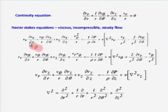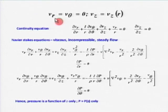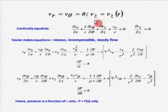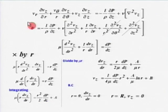Using the fully developed concept, we neglected the R-momentum equation and the theta-momentum equation. V_R equals V_theta equals zero, because it is fully developed flow and V_Z is only a function of R, not theta and Z. The R-momentum and theta-momentum equations are not required. I have to take the V_Z equation.